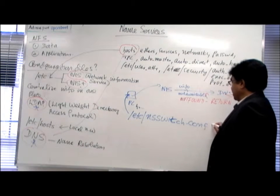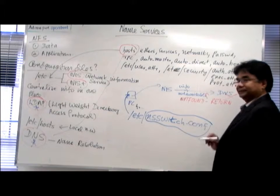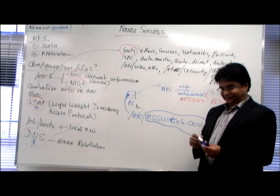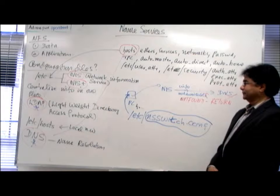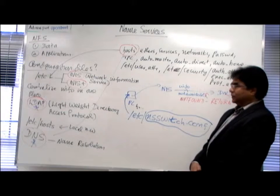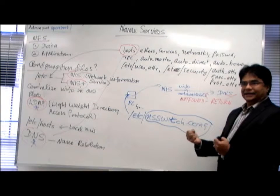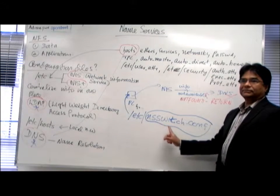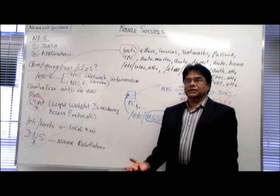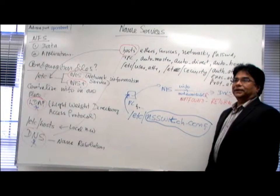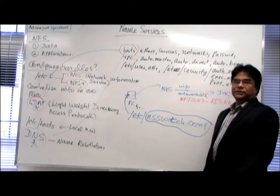So I have a file in my local machine. In the ETC directory, the file is called NSSwitch.conf — name service switch dot conf. When the computer starts, it will first understand what domain it belongs to by reading another file called defaultdomain. Then after that, it reads this NSSwitch.conf file. So when the system boots, it will know its domain, and it will automatically go and read this file.